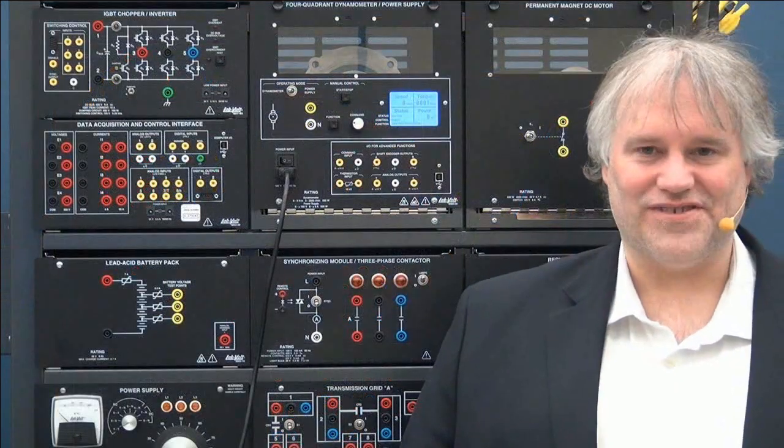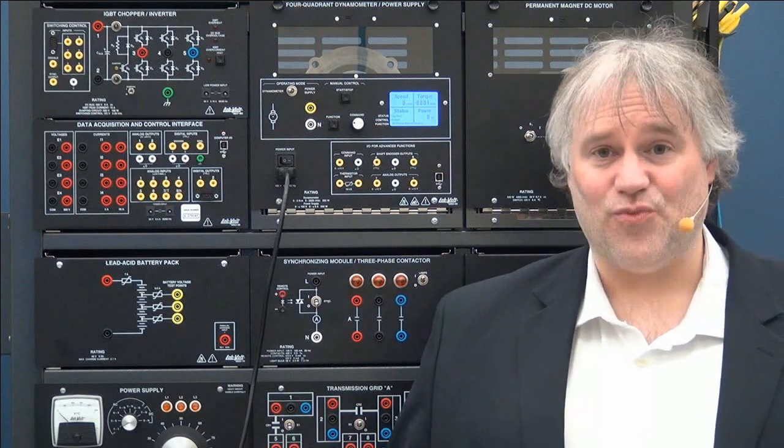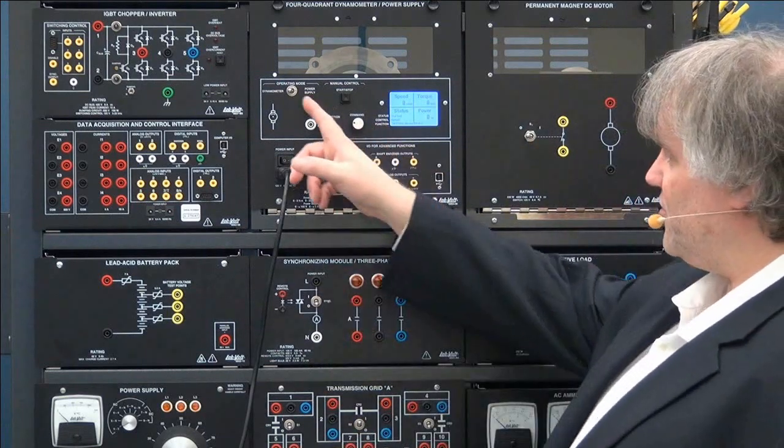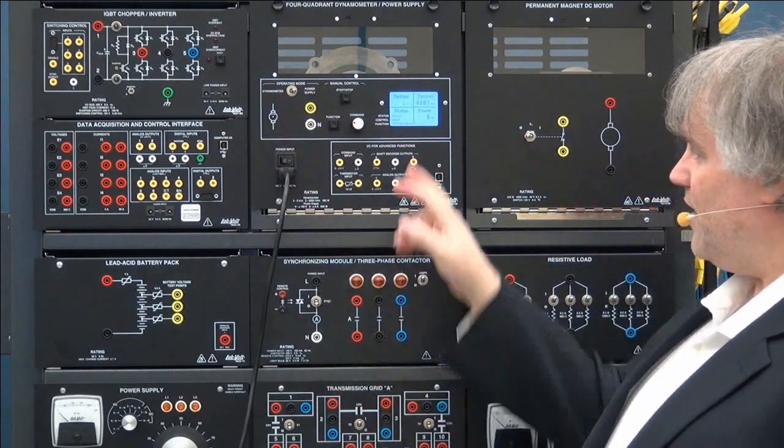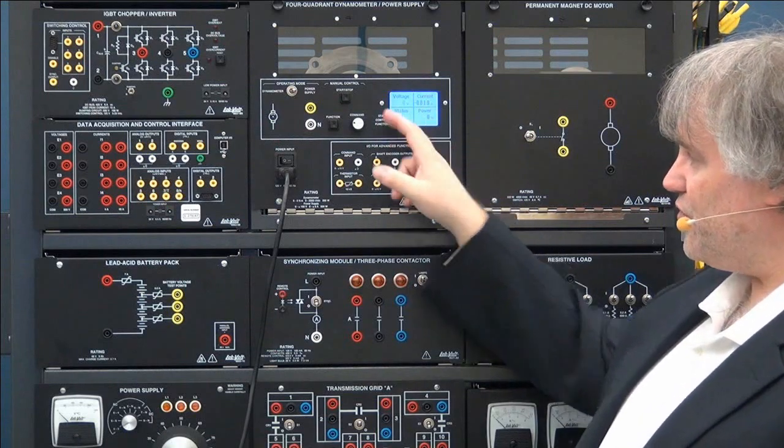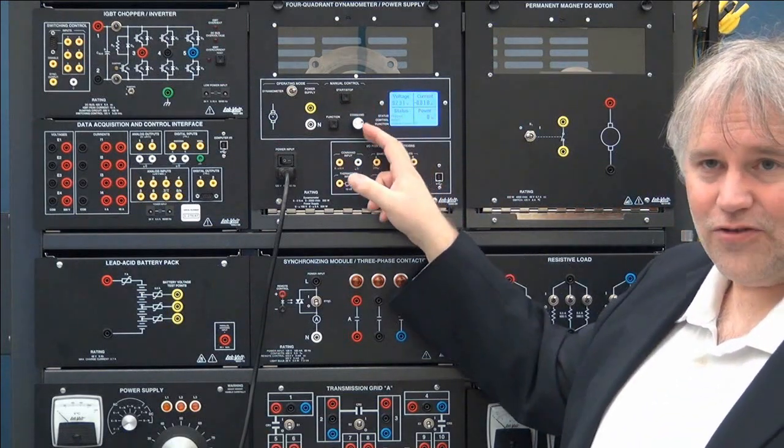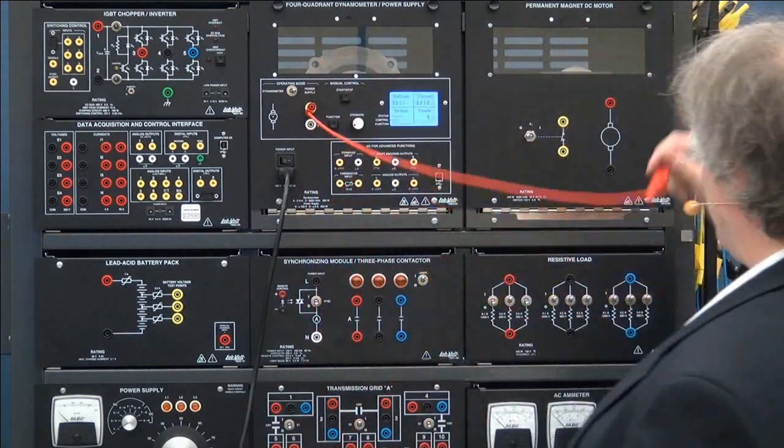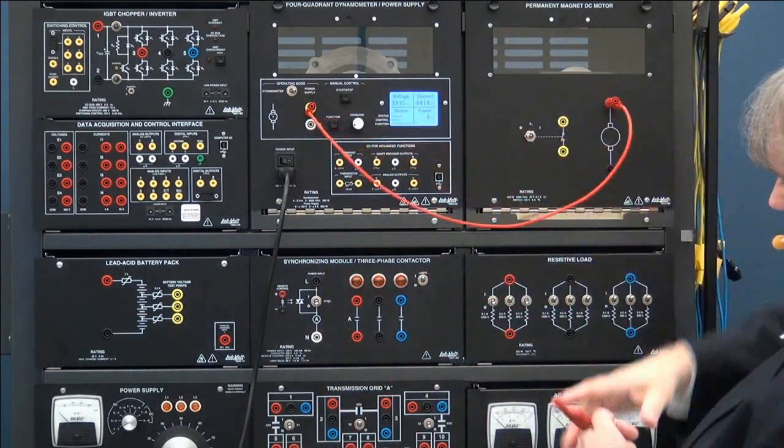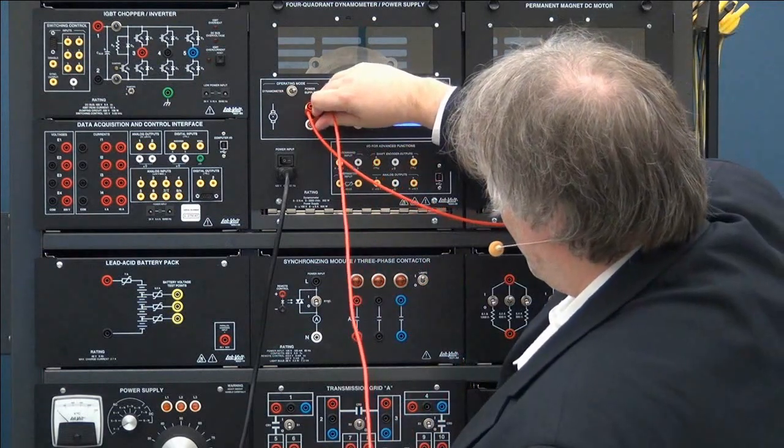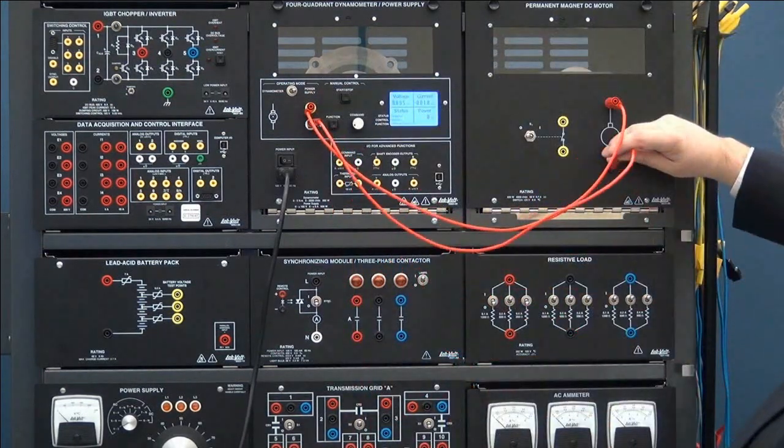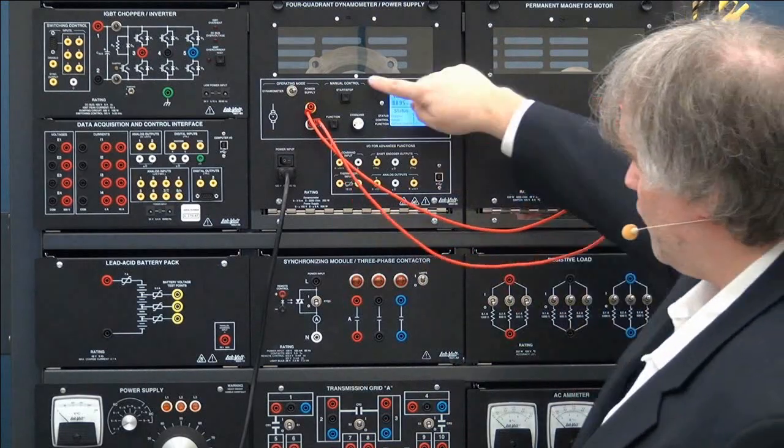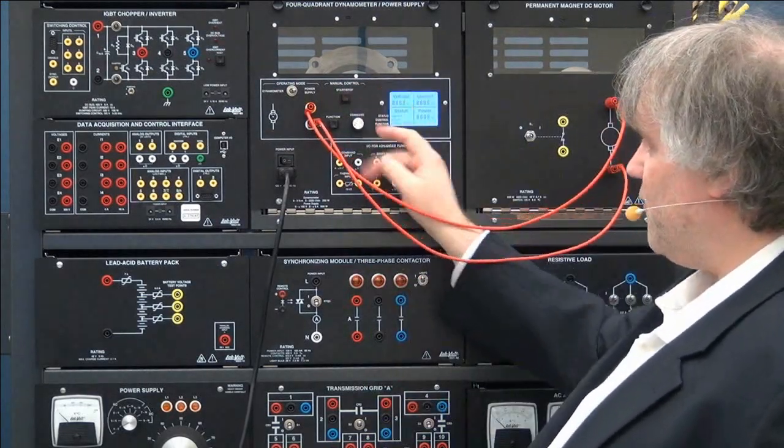In the third exercise they will study the permanent magnet DC machine as a motor. To do that in order to have a variable power supply to apply to it, we will use the dynamometer in the power supply mode. We will use it as a voltage source so you can control your DC voltage here. And we will connect the variable power supply directly on the motor itself.